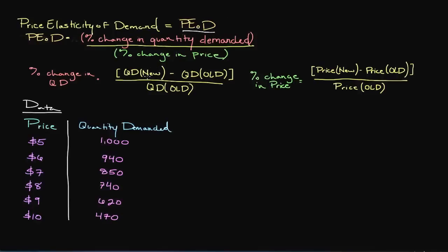which I went ahead and notated here as simply capital PE and little o and capital D, is equal to the percentage change in quantity demanded, which is here, divided by the percentage change in price, which is notated here. So that is the kind of the overall equation.